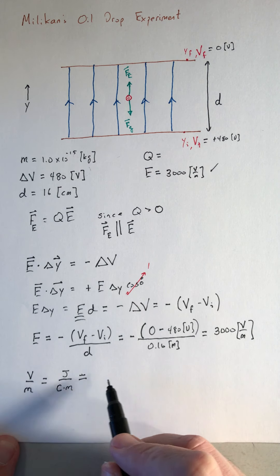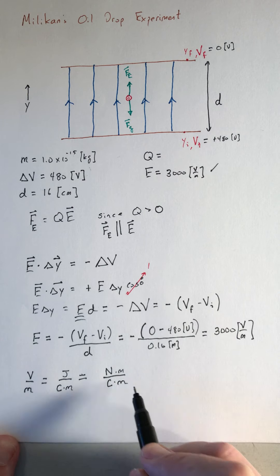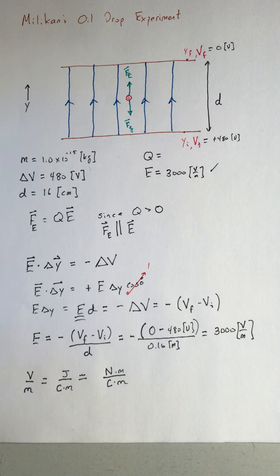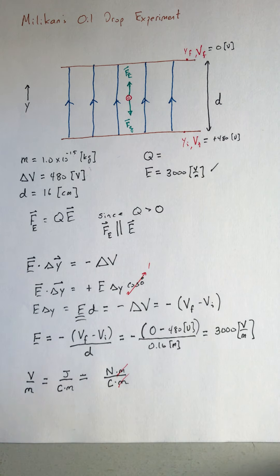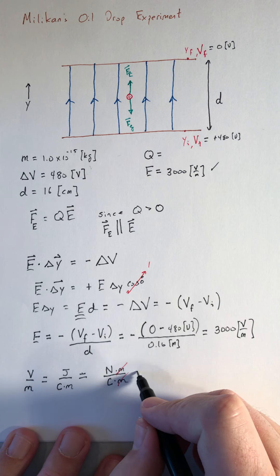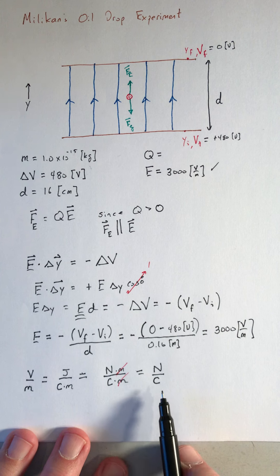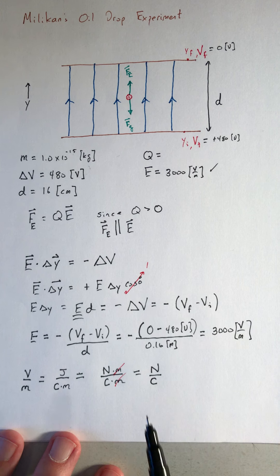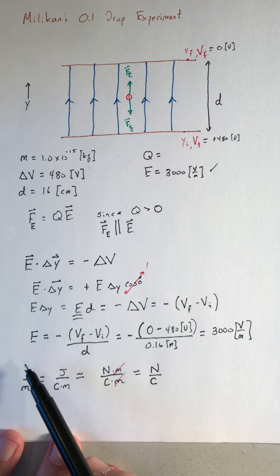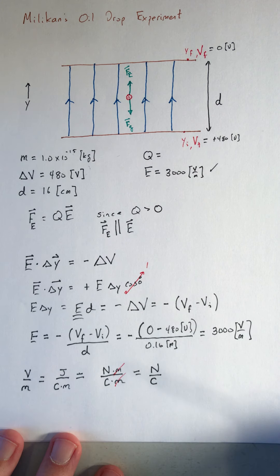A joule is a newton meter. So I have a newton meter over a coulomb meter. And now this should look more familiar. So the meters cancel out. So a volt per meter is actually the same thing as a newton per coulomb, which is what we're more familiar with when we first introduced the electric field. So anytime you have an electric field, you can measure it in volt per meter, if that's more convenient, or newton per coulomb, if that is more convenient.